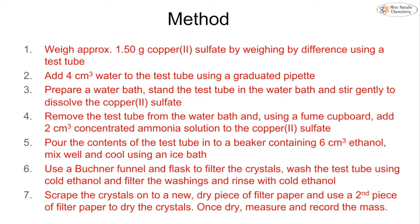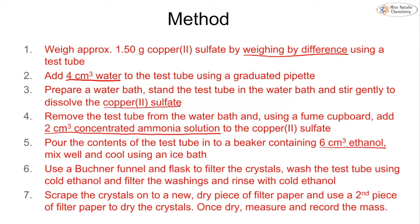To carry out the practical: weigh approximately 1.5 g of copper(II) sulfate using weighing by difference and place it in a test tube. Add 4 cm³ of water and stand the test tube in a water bath to completely dissolve the copper sulfate. In a fume cupboard, add 2 cm³ of concentrated ammonia solution. Pour the contents into a beaker containing ethanol, mix well, and cool using an ice bath. Use a Buchner funnel for vacuum filtration to collect the crystals, wash the test tube with cold ethanol, filter the washings, and rinse with cold ethanol again.